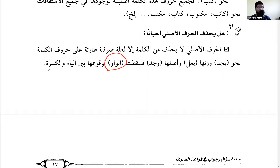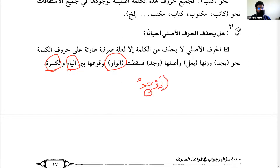The WAW dropped (فَسَقَطَتِ الْوَاو) because of its occurrence between the YA and the Kasra (لِوُقُوعِهَا بَيْنَ الْيَاءِ وَالْكَسْرَة). Originally it was يَوْجِدُ — YA with Fatha, WAW with Sukun, JIM with Kasra. These are two enemies for the WAW: the YA before it and the Kasra after it.